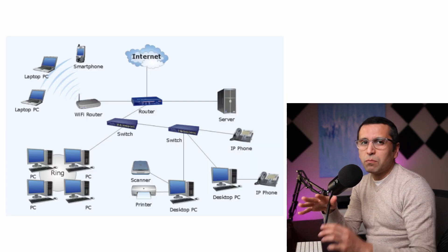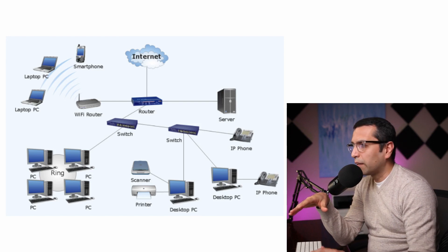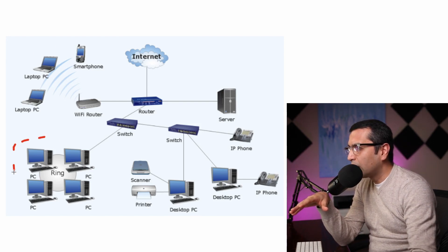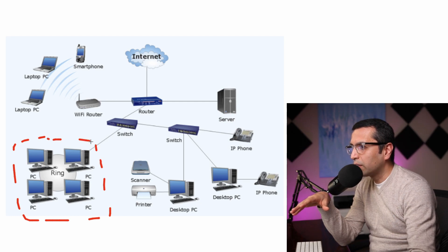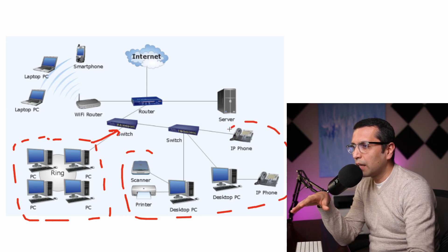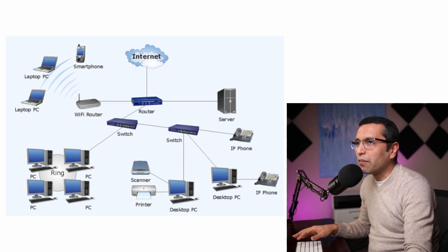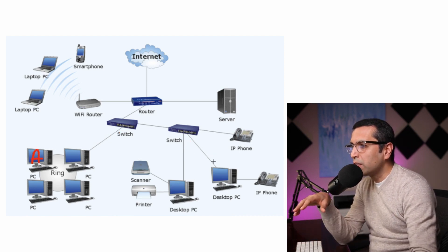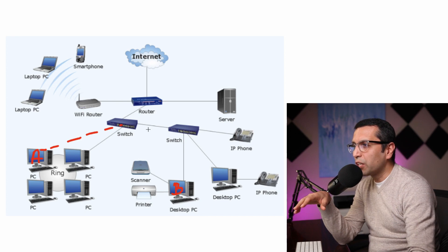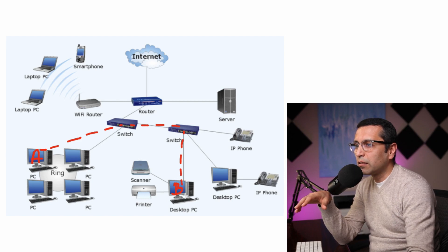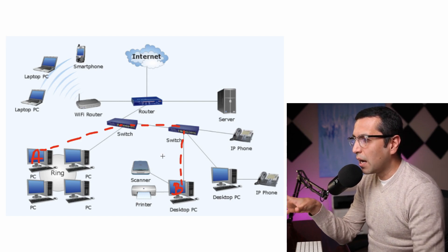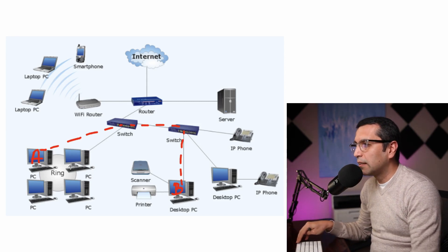Let's make the network a little more complicated. Now I see one network where all devices are connected to one switch, and we have another group of devices all connected to another switch. If computer A wants to talk to computer B, it must send the data to the first switch, the switch forwards it to the second switch, and that switch delivers the packet to B. This is how the network works and how data flows.